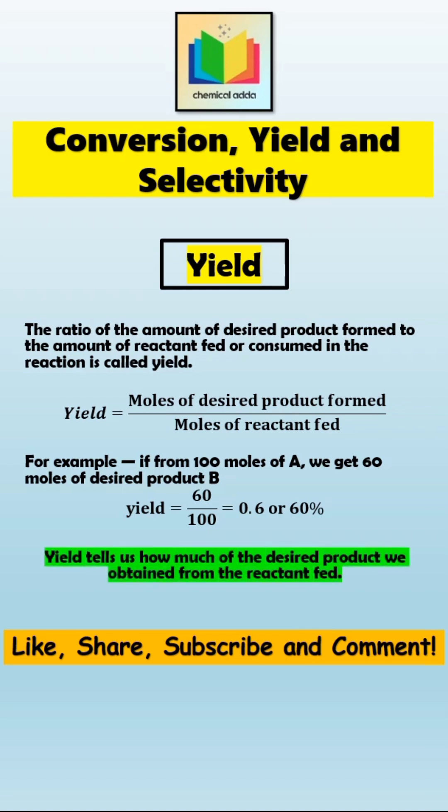Hence, yield focuses on the desired product and tells us how much of the desired product we obtained from the reactant fed. However, not all reactants turn into the desired product; some also form side products. That's where selectivity comes in.